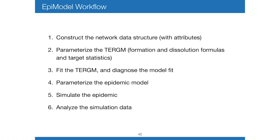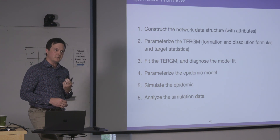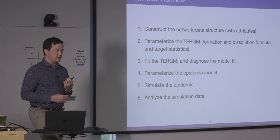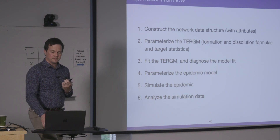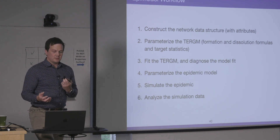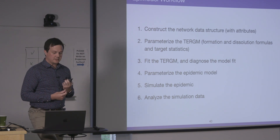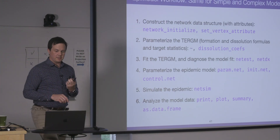The general workflow for EpiModel follows the idea of working with sampled egocentric network data — though not required, as you can also input an observed census network object. Usually we work with sample data because of the population scale concerned. We set up a data structure with attributes, parameterize and fit a TERGM, diagnose model fit, then parameterize an epidemic model, simulate an epidemic, and analyze all simulation data. There's a series of functions for each step to help you along the way.